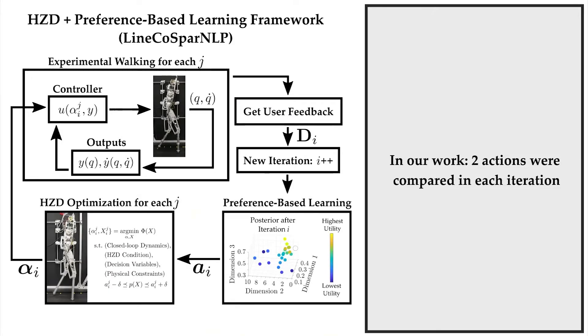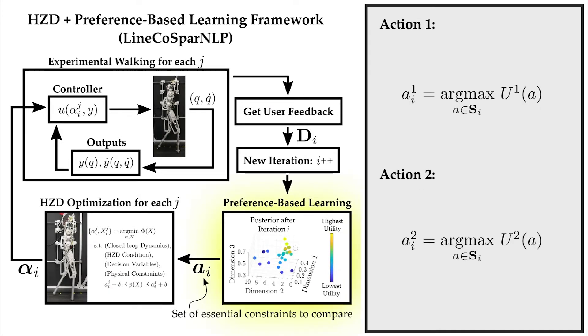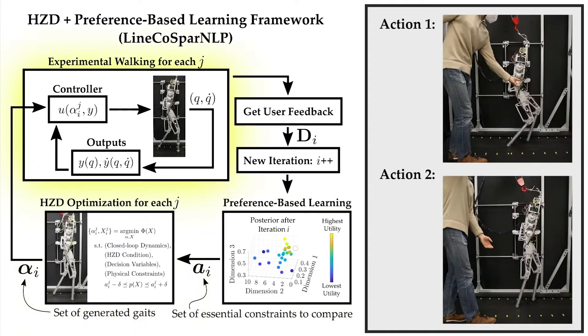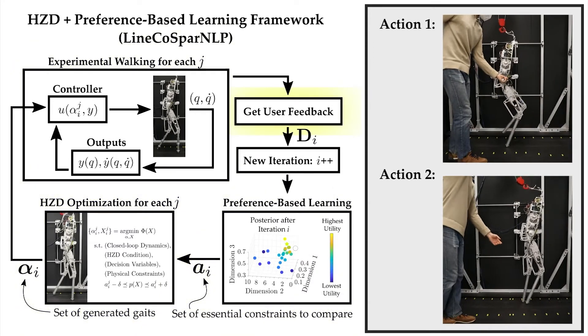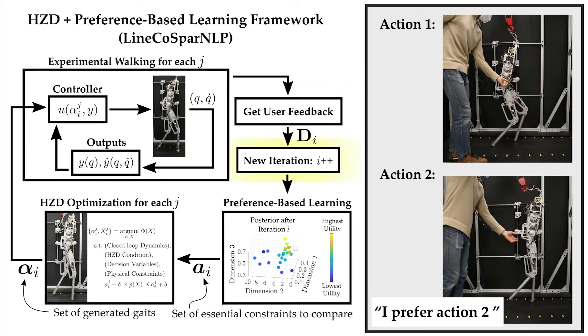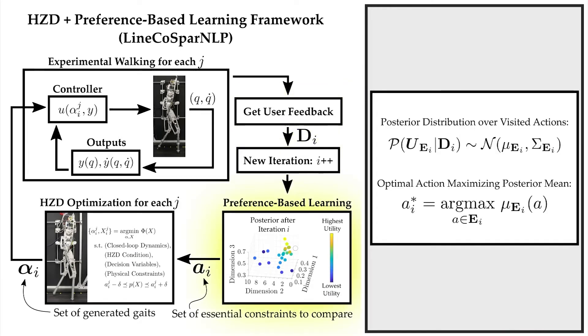In each iteration, new actions are sampled via Thompson sampling. Gates are then generated for these actions and executed on the robot. A human operator observes the experimental performance and provides a pairwise preference. The learning framework then updates its belief of the optimal action using this new preference information and the process is repeated.